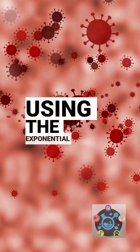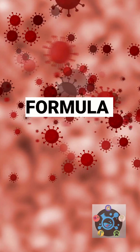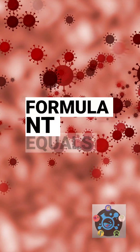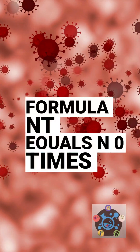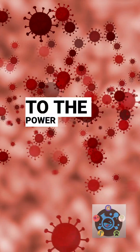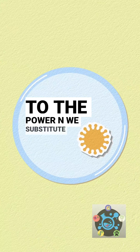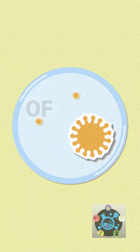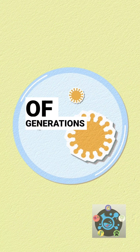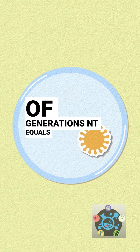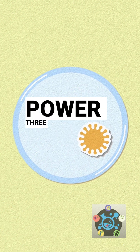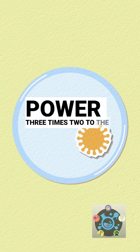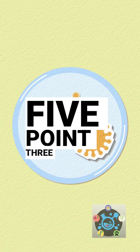Using the exponential growth formula — Nt equals N0 times 2 to the power n — we substitute the initial cell number and the number of generations: Nt equals 10 to the power 3 times 2 to the power 5.33.